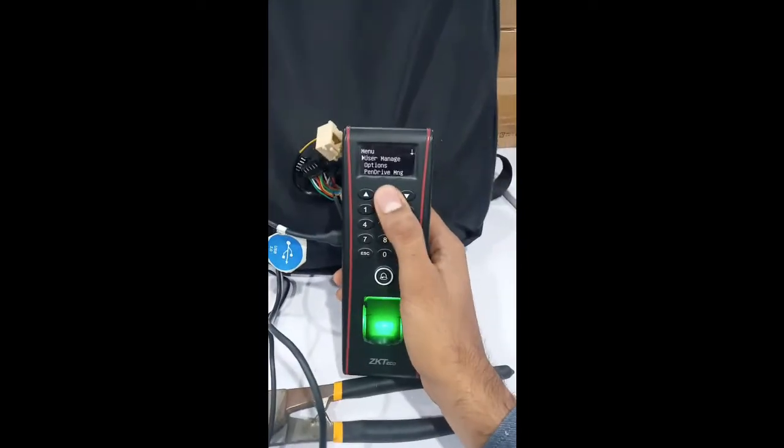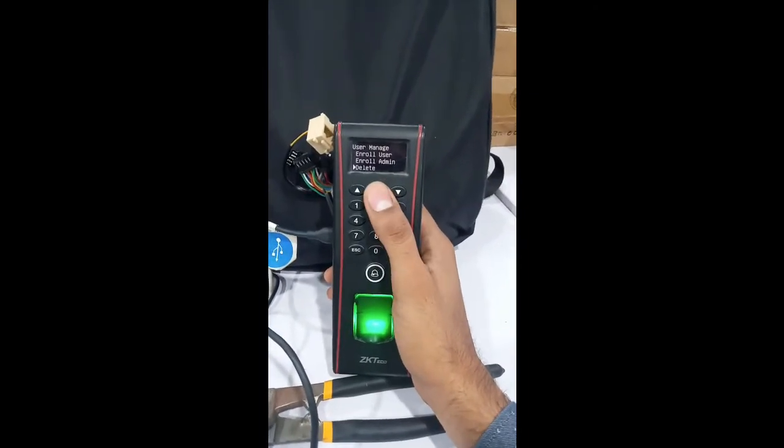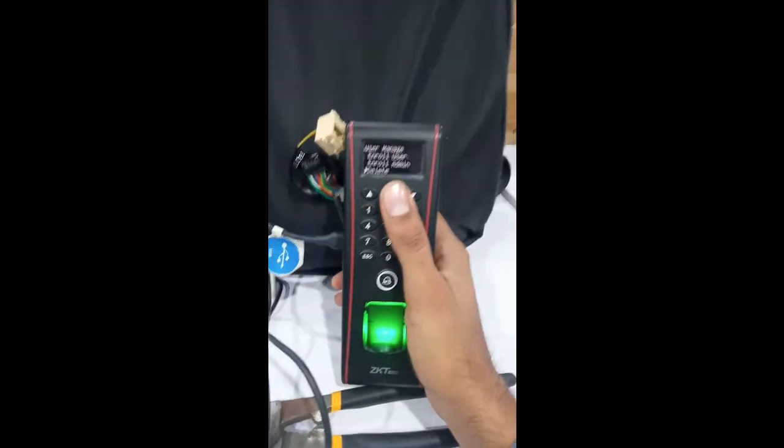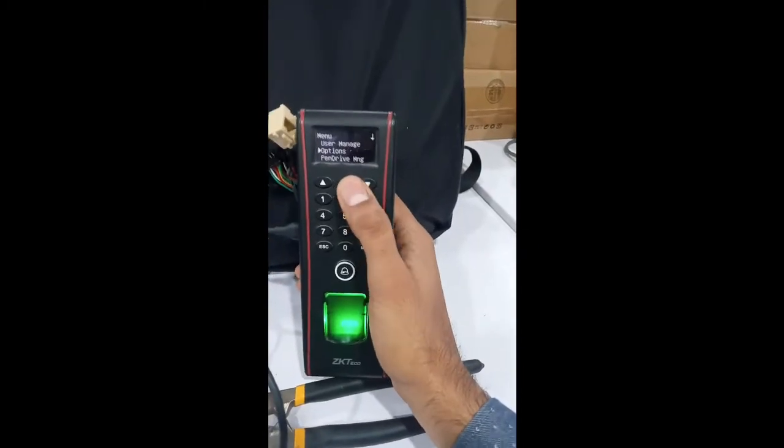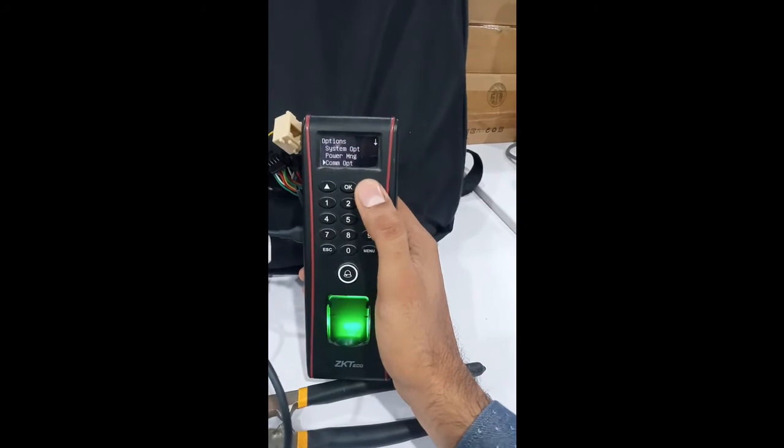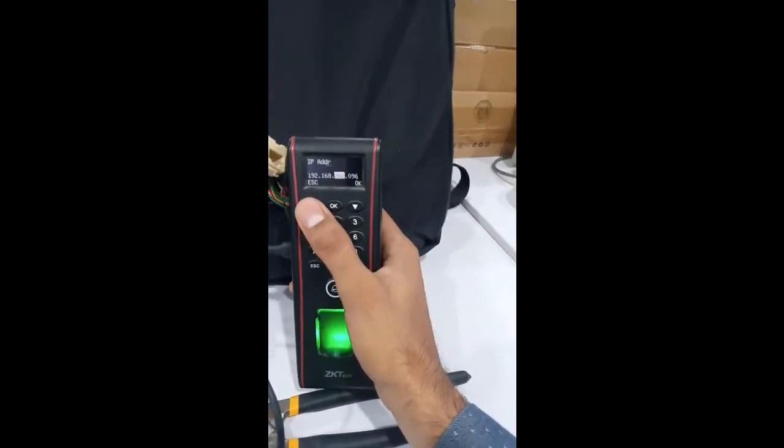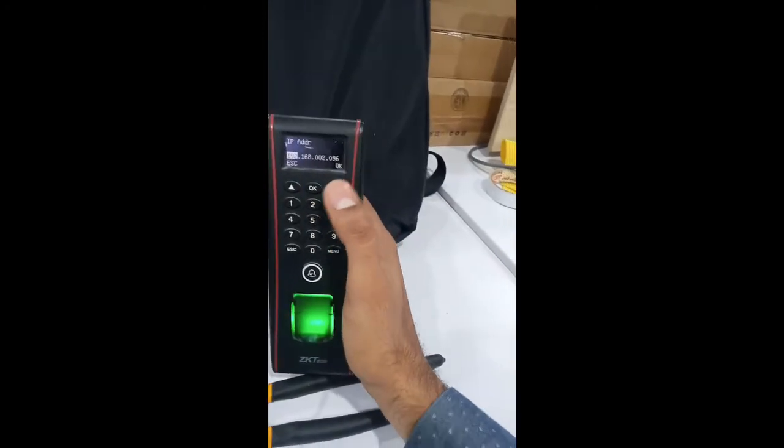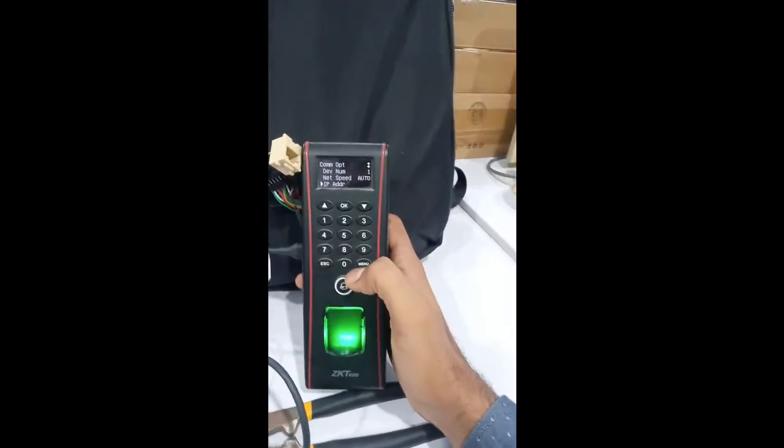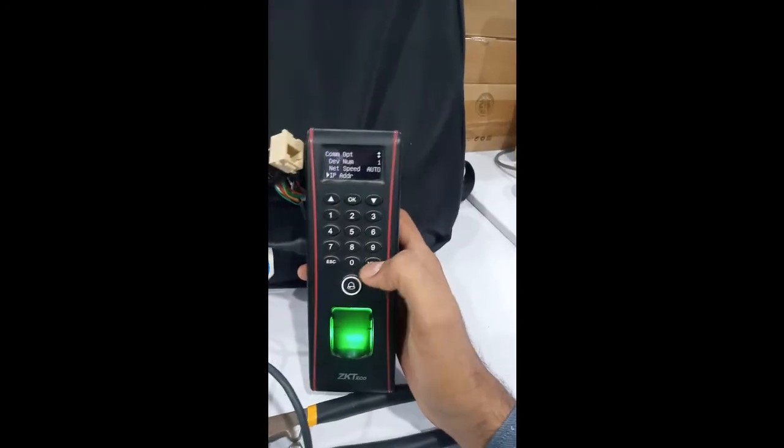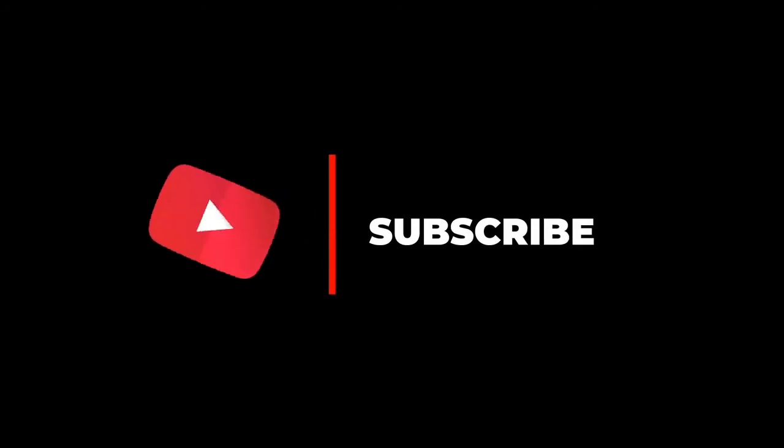From menu, we can delete admin. We can add another admin. We can also access its IP address. And by using this IP address, we can completely reset this device by using ZK Time 5.0 software. Thank you.